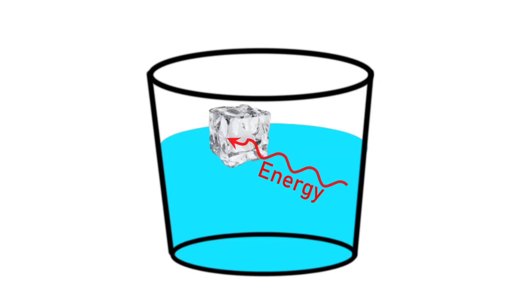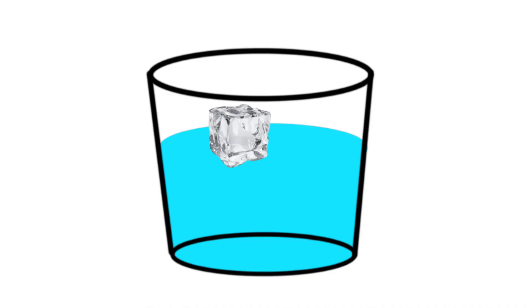Consider what happens when you drop an ice cube in water. Energy spontaneously flows from the water to the ice, making the ice warmer and the water colder, until eventually the ice melts. Energy does not flow the other way — from the ice to the water — because energy does not concentrate. Energy tends to spread out, driven by entropy. It's this tendency of energy to spread out to the greatest extent possible that causes substances to mix together and solutions to form.